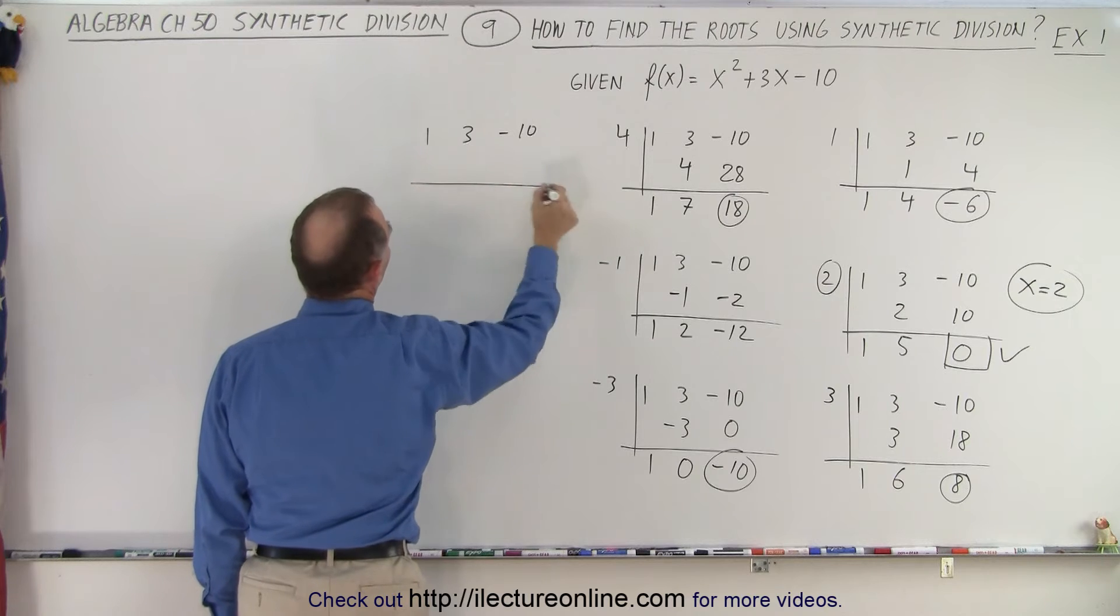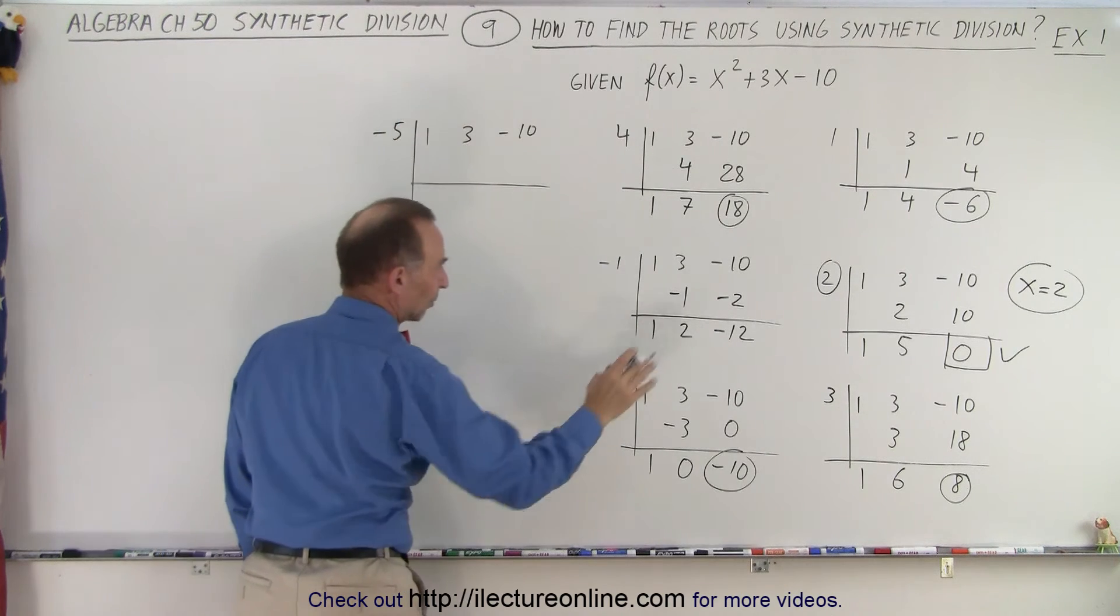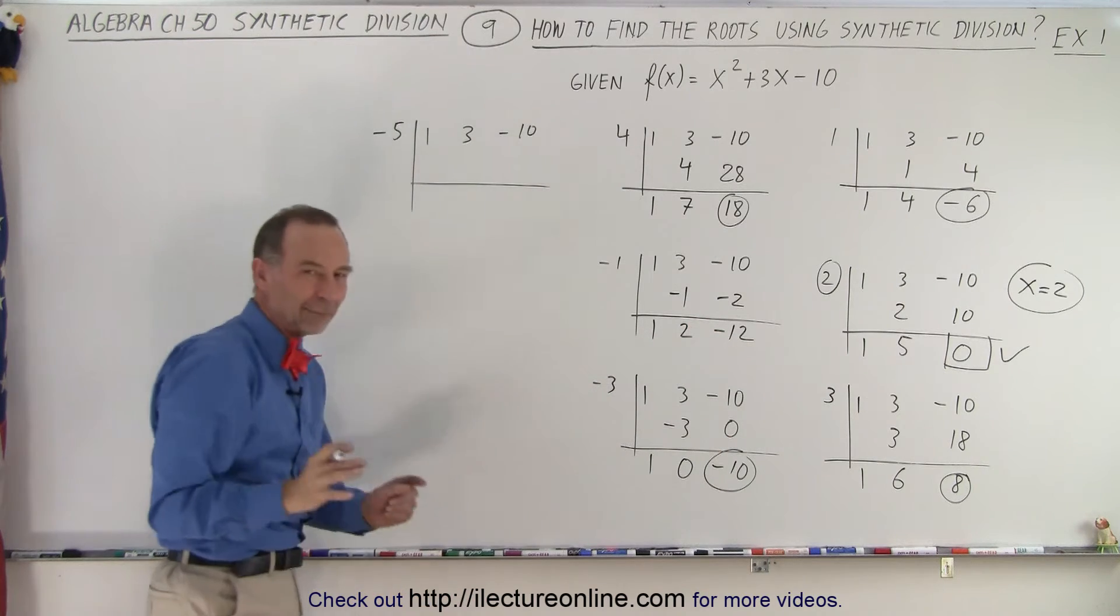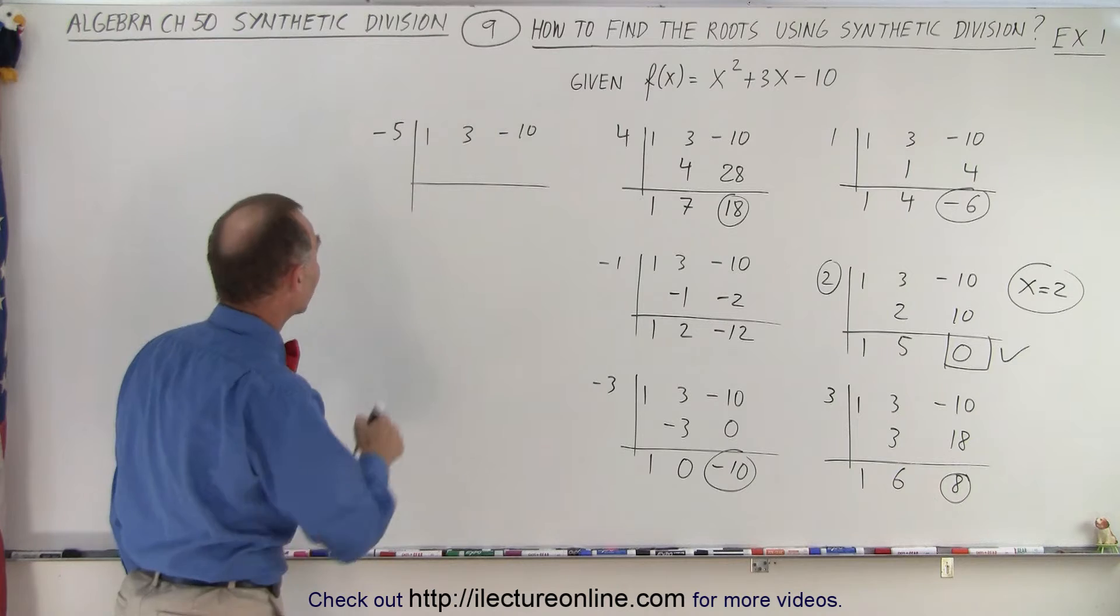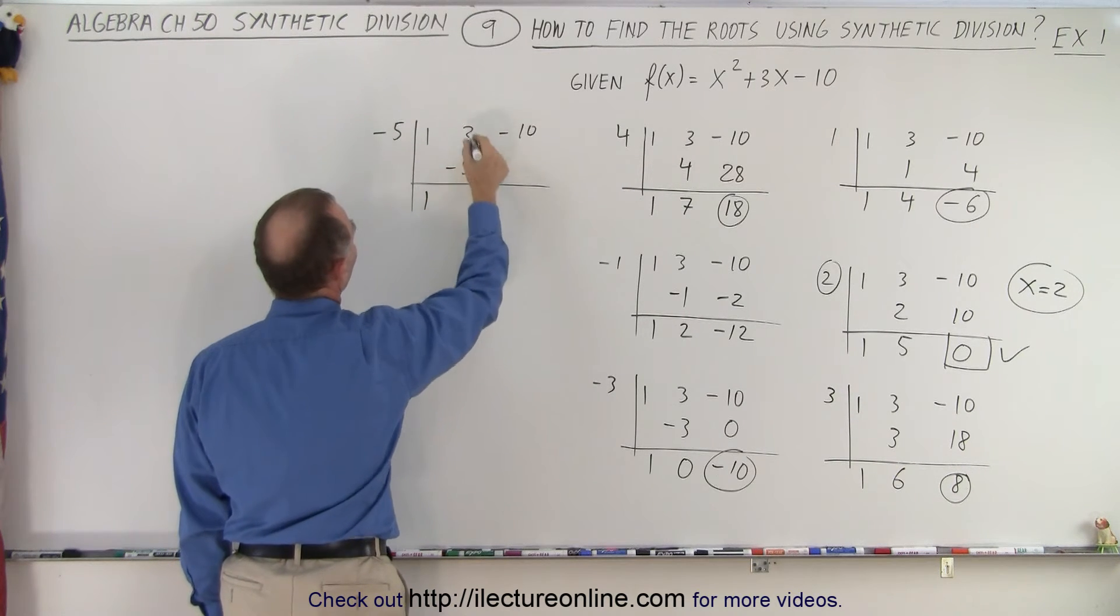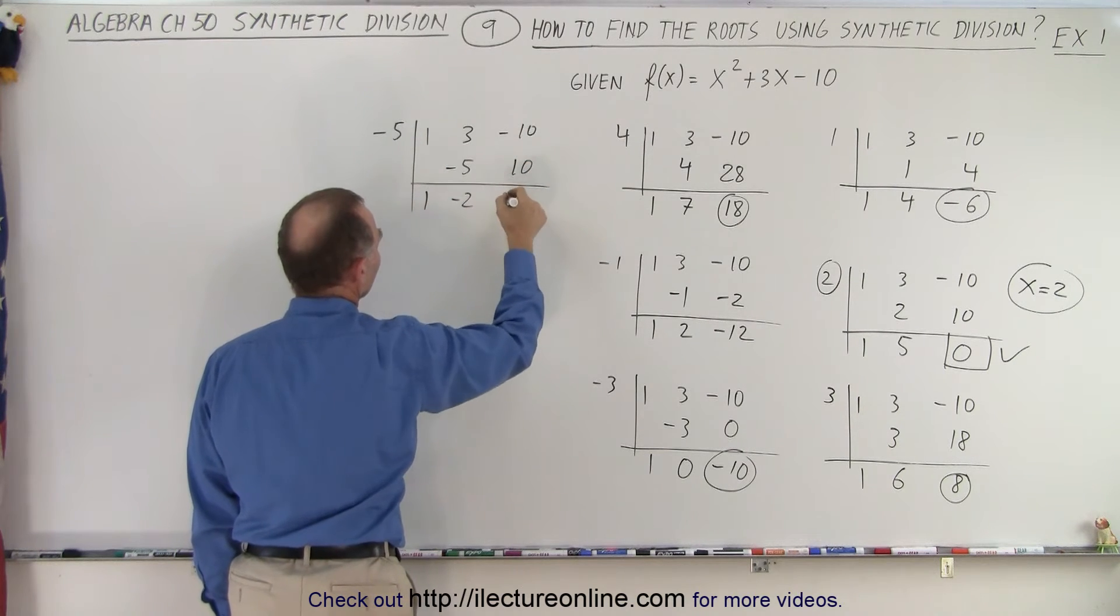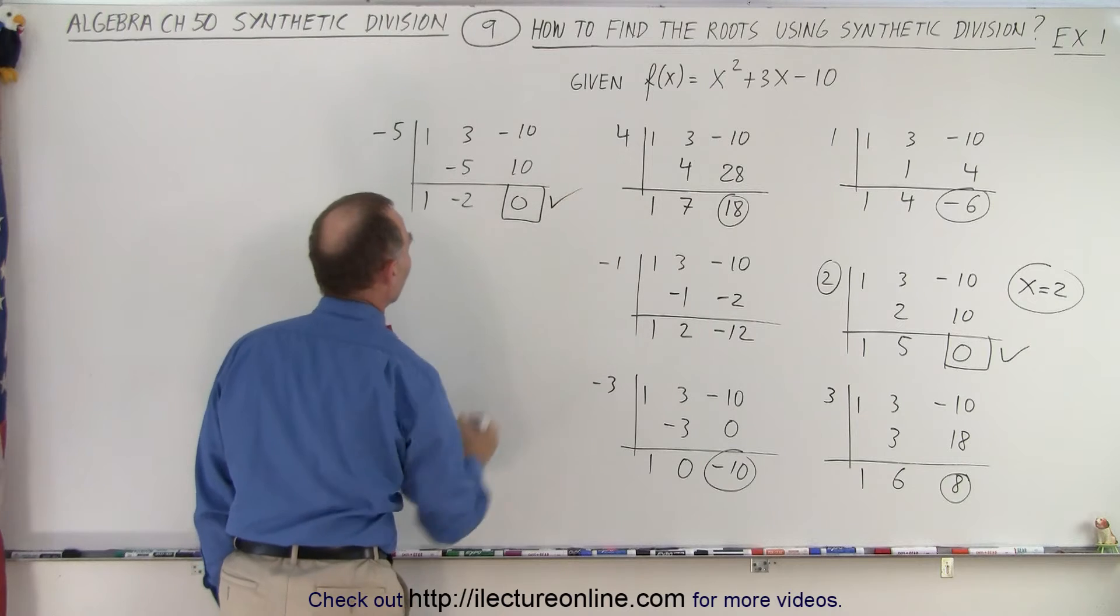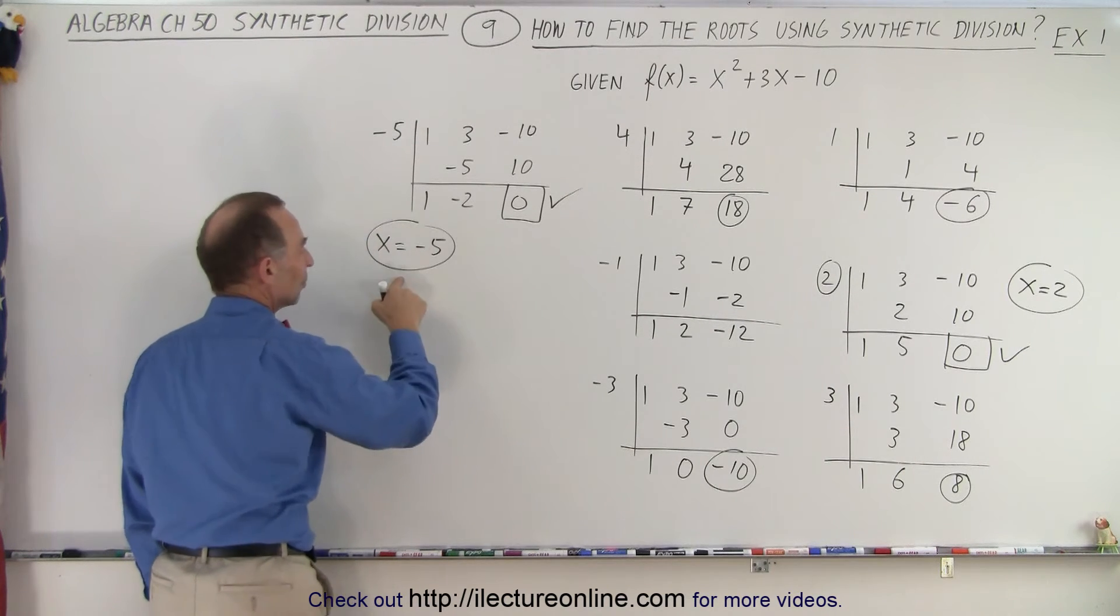Negative 10. And let's jump all the way to negative 5. Because I went from negative 12 to negative 10. That didn't get me close to 0 quickly. So maybe I'll skip negative 4 and go to negative 5. I drop down the 1. Negative 5 times 1, that's negative 5. Add them together to negative 2. Negative 5 times negative 2 is a positive 10. Add it together to get 0. And that was the correct value. So when x equals negative 5, I have the second root.